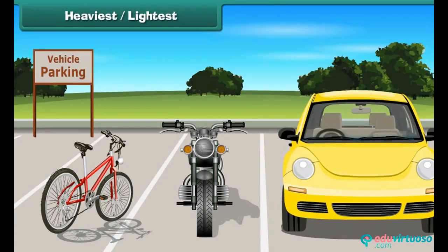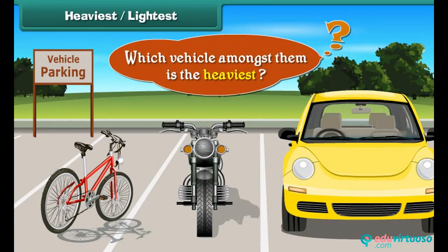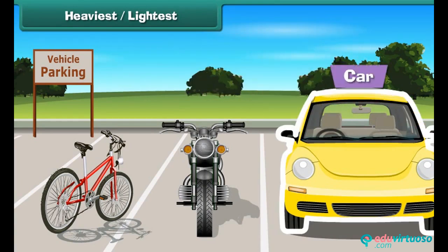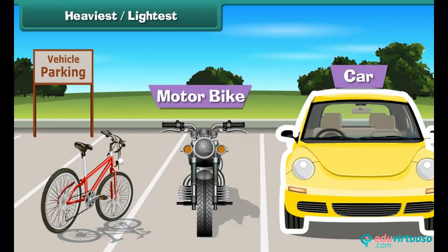Look at these vehicles parked in the parking bay. Which vehicle amongst them is the heaviest? Car is the heaviest vehicle. Motorbike is less heavy than the car, and the bicycle is the least heavy amongst all of them.